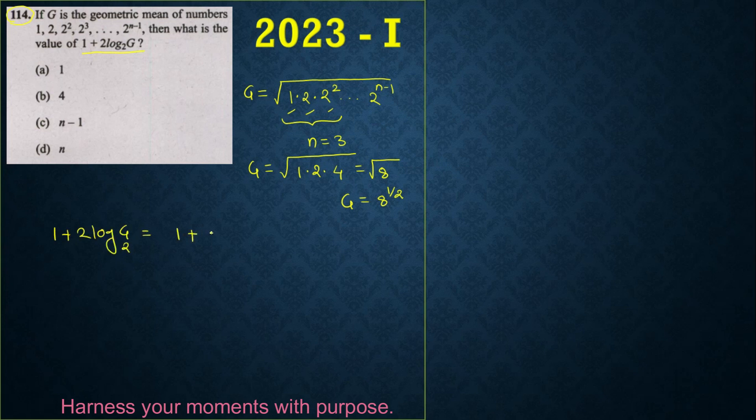And you know that the logarithmic properties, that the index we can take on the multiplication side. So it's 1 by 2 into log of 8 base 2. Now this 2 gets cancelled.